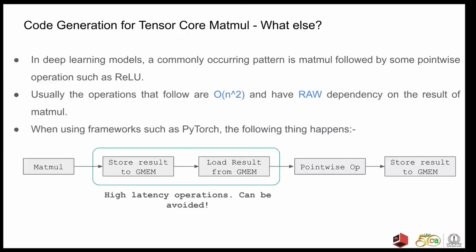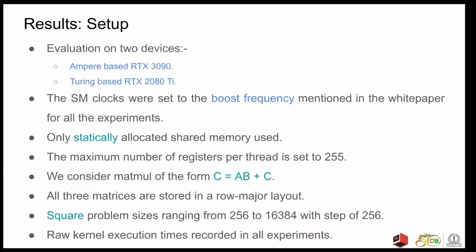So now we'll take a look at the performance results of the code generated using our pipeline. So for the setup, we have evaluated our pipeline on Turing and Ampere architectures. On the Turing, it was 2080 Ti and Ampere RTX 3090 on both mixed and half precision. In the interest of time, we'll only look at the results from Ampere on mixed precision. The other results are available in the paper and I'll just drop the link to the paper in the chat box after the talk. The SM clocks were set to the boost frequency mentioned in the white paper for all the experiments. And we use only statically allocatable shared memory that was available. And the maximum number of registers was set to 255. And we consider matmul of the form C equal to A into B plus C. All the three matrices are stored in the row major layout. And we use square problem sizes ranging from 256 to 16384 with a step of 256.